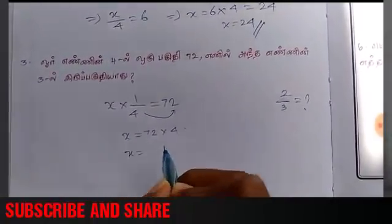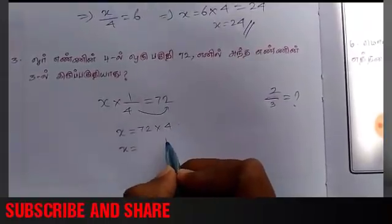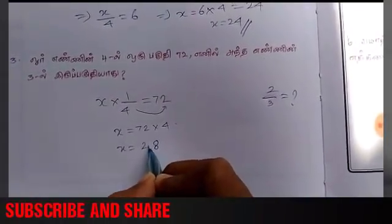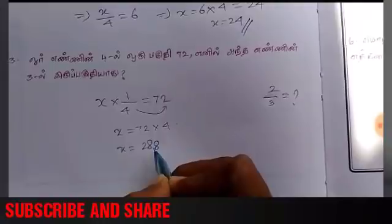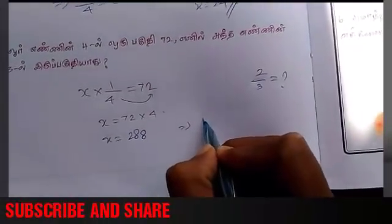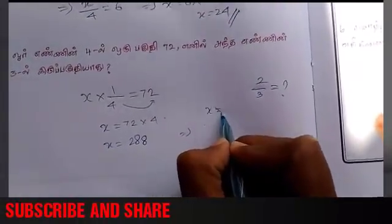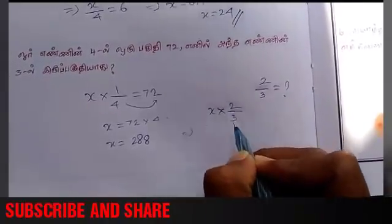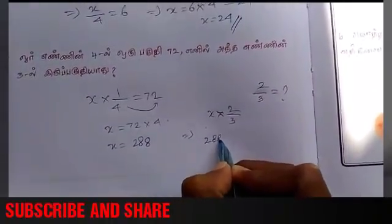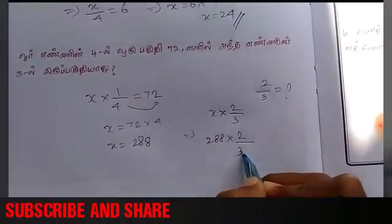2 by 3. x equal to 72 into 4. x equal to 248. 28. 288. We call it 2 by 3. x equal to 288.